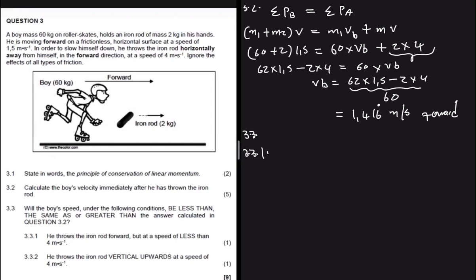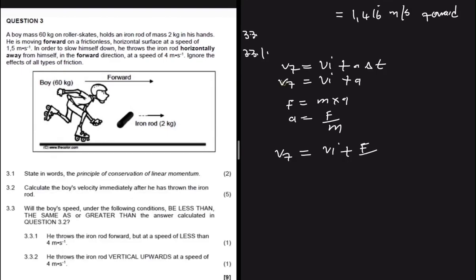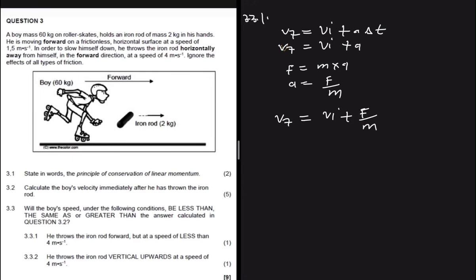To reason through this, we connect speed, acceleration, and force. We know vf = vi + a·Δt. Taking the interaction time as one second, vf = vi + a. Since F = ma, the acceleration equals F divided by m. So vf = vi + F/m. This gives us a way to link the force applied on the rod to the resulting change in the boy's speed.